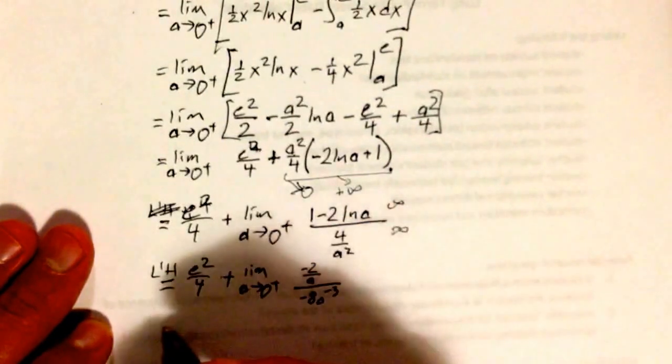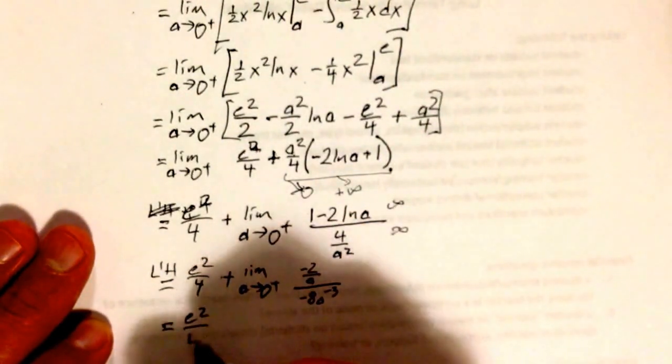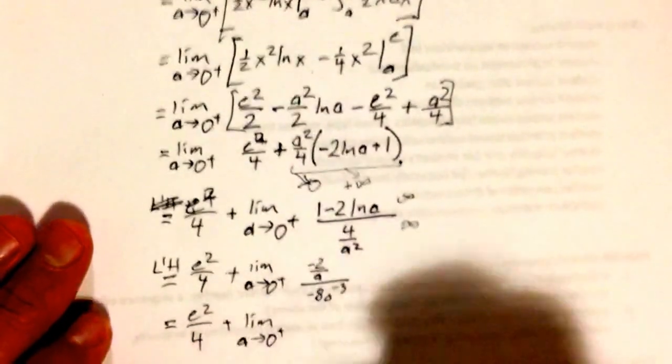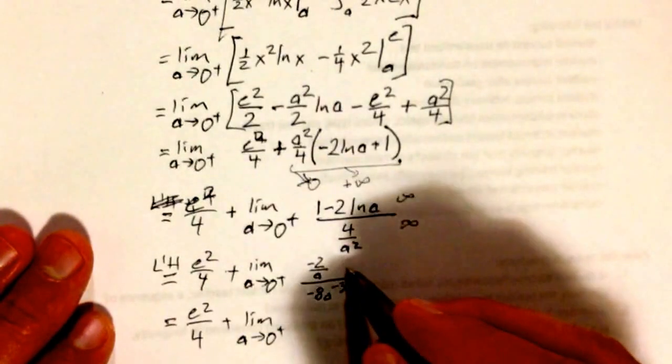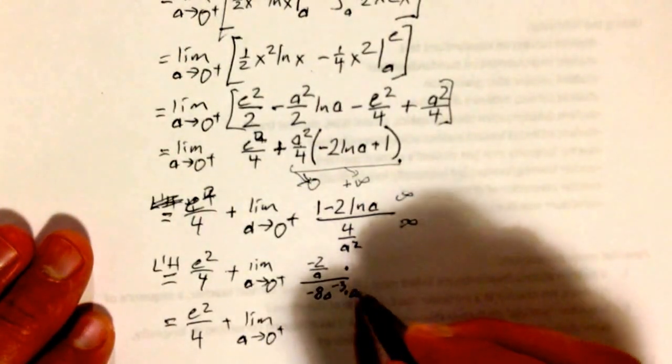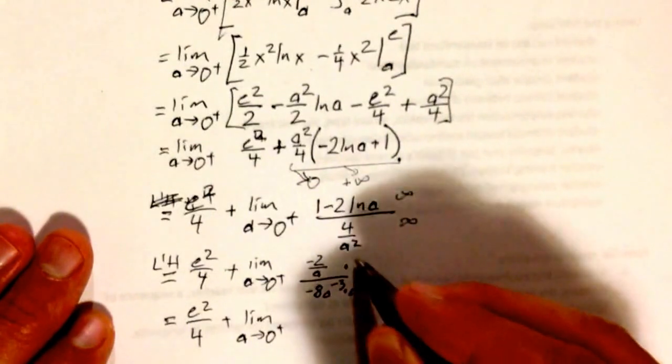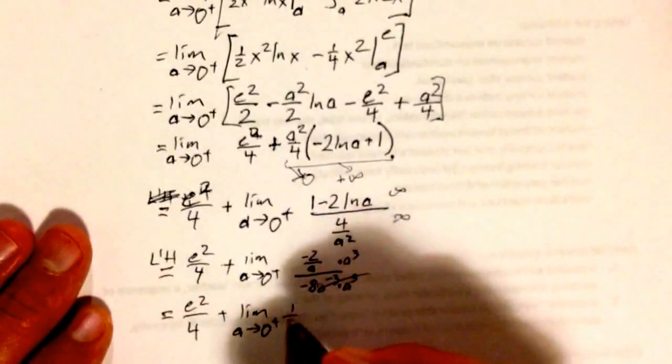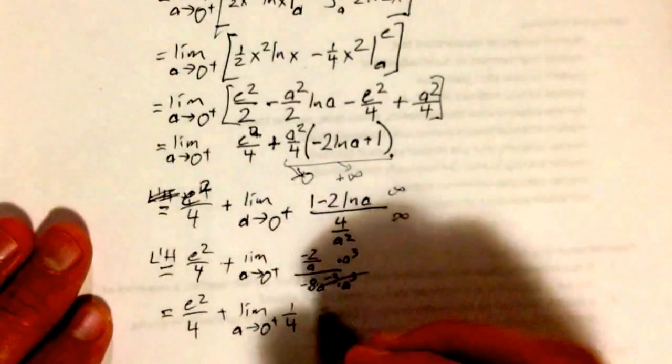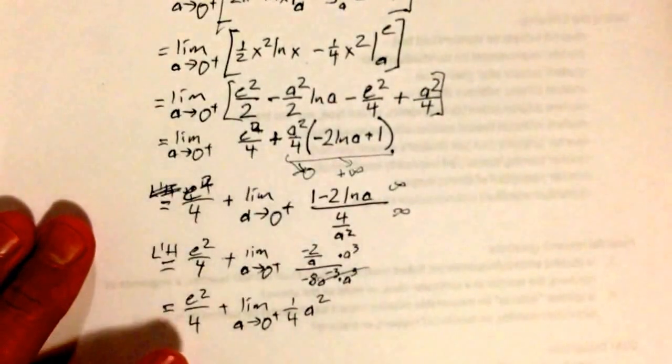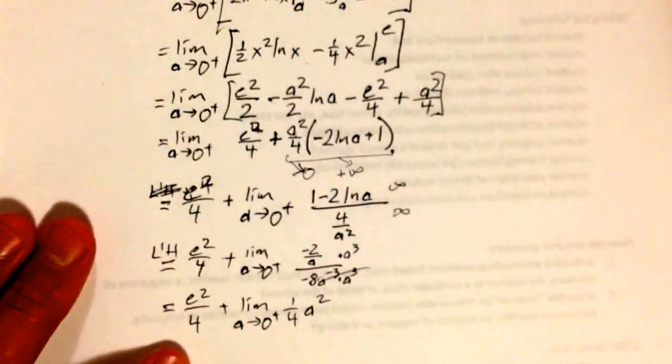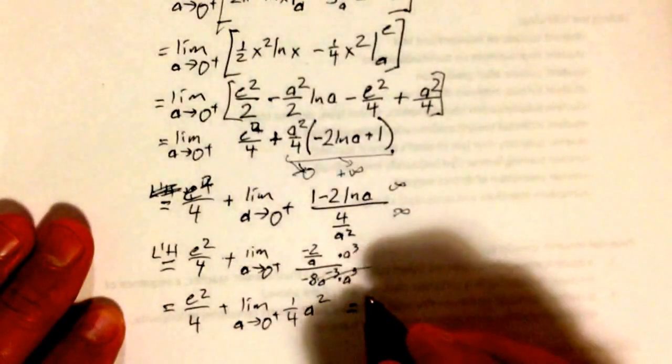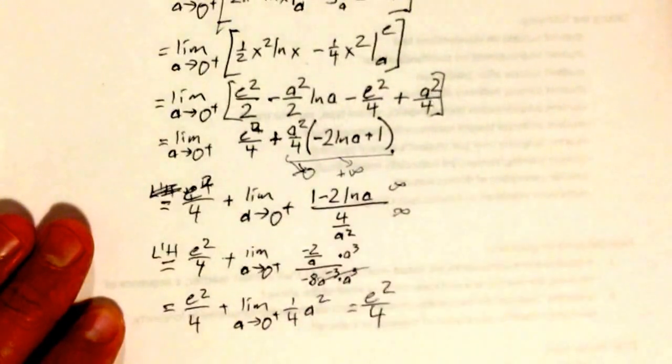Let me simplify that down. e squared over 4 plus the limit as a goes to 0 in the positive direction. Let's multiply this times a to the third over a to the third, those cancel. I'll get a 1 fourth out in front here, and I get a squared there. Now the limit as a goes to 0 of a squared is 0, so I get e squared over 4, and the limit converges.